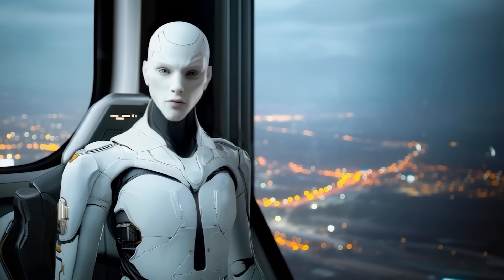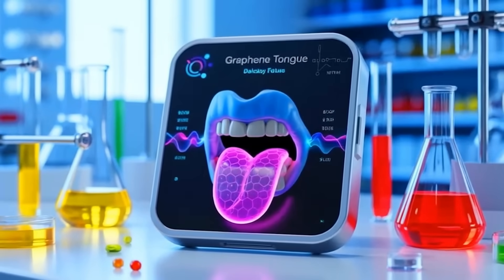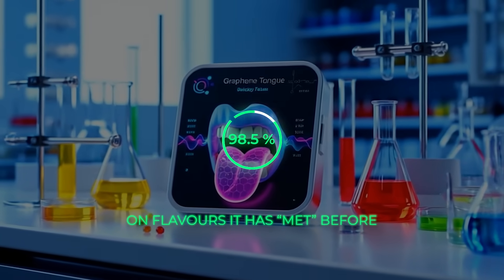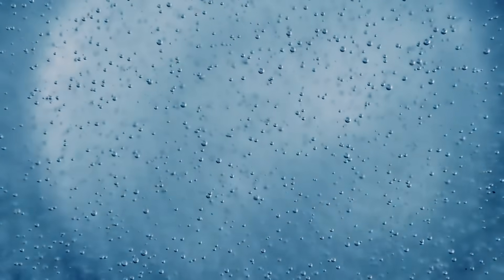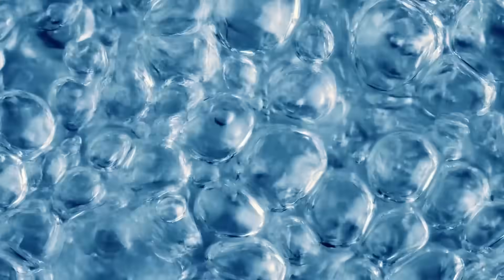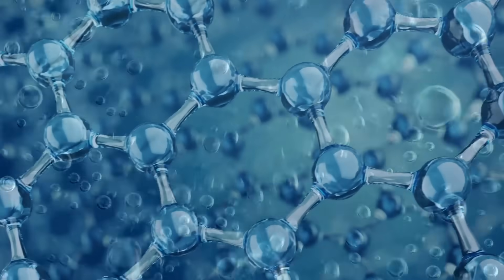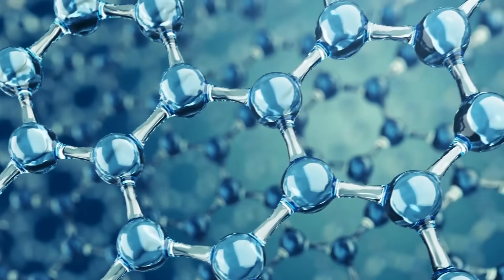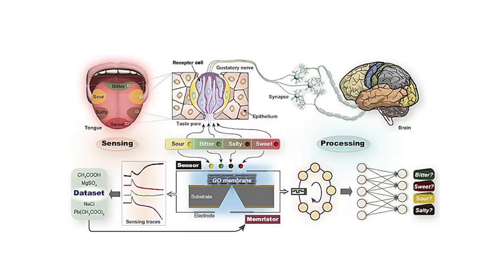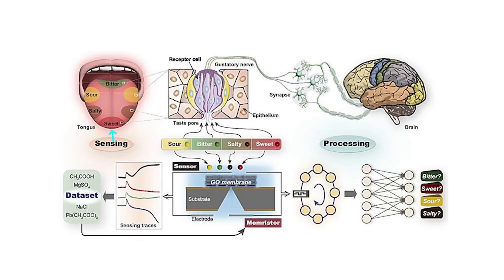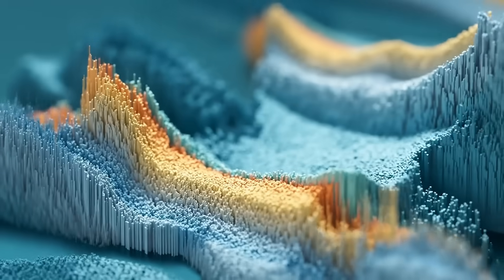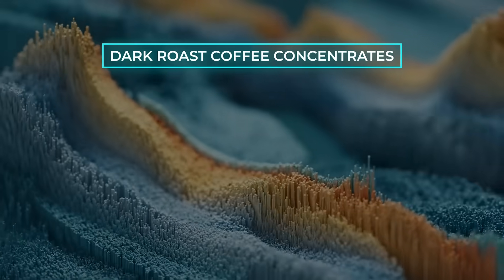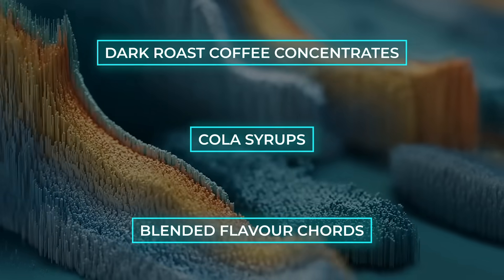A research group has just shown off what they call a graphene tongue — an artificial taste sensor that already clocks about 98.5% accuracy on flavors it has met before, and 75 to 90% on 40 completely new ones. The hardware is clever: the team layers graphene oxide sheets, each only one atom thick, inside a nanofluidic channel that guides a tiny stream of liquid across the stack. As molecules in that liquid bump into the graphene, they tweak its electrical conductivity in a signature pattern, rather like the way certain keys press specific piano strings. To teach the tongue what those patterns mean, researchers ran 160 different reference chemicals covering the classic sweet, salty, bitter, and sour spectrum through the device, and fed the resulting conductivity curves into a machine learning model. The training data also included complex mixtures such as dark roast coffee concentrates and cola syrups, so the algorithm learned to recognize blended flavor chords, not just single-note molecules.